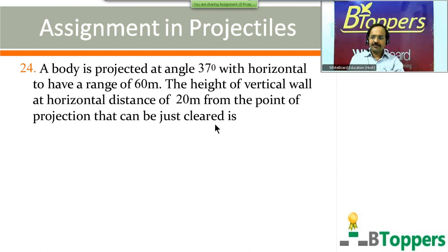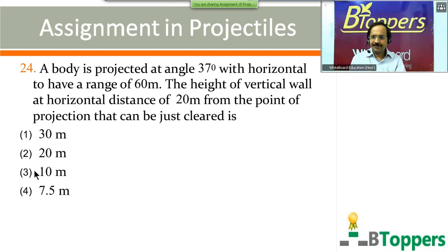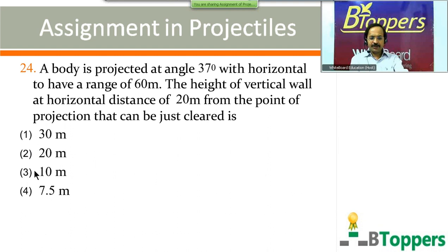Question number 24: a body is projected at an angle of 37 degrees with the horizontal to have a range of 60 meters. The height of a vertical wall at a horizontal distance of 20 meters from the point of projection that can just be cleared is — four options are shown on screen. Come on, try the question.